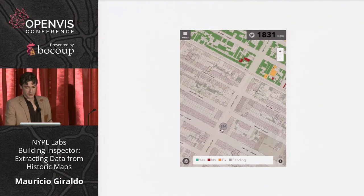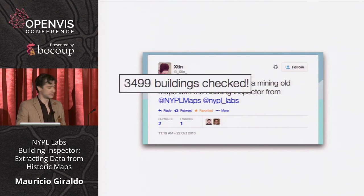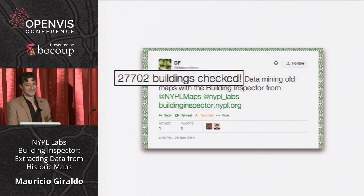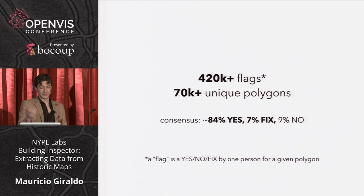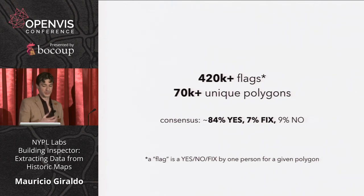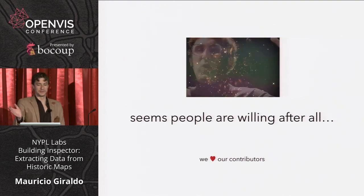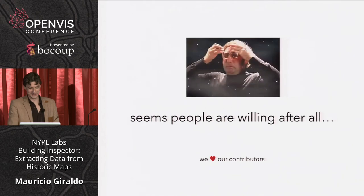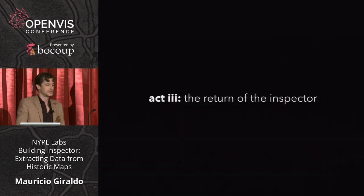Seeing lots of green is good. About a month later, we saw things like this. Overall, about 420,000 flags have been produced — a flag being a yes, a no, or a fix by a person — for 70,000 plus unique polygons. The important part: 84% are yes in consensus and 7% are fixes. For us, it's pretty good results. This blew our minds — people are willing, after all, to contribute, and it's all free with no other incentive.